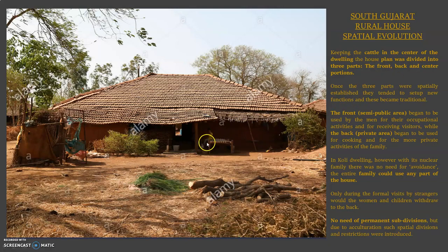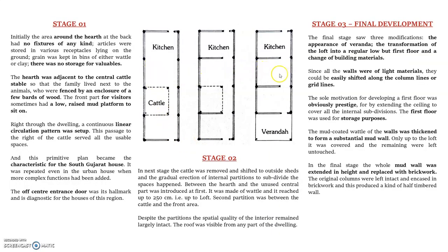Looking at the planning, there are three stages of evolution for this rural arrangement. Since these people were an agriculture and cattle-rearing community, cattle was very important to them. Their plots were deep rectangles, and importance was given to cattle. The cattle was introduced to the total center of the house — spaces were planned along the structural grids.